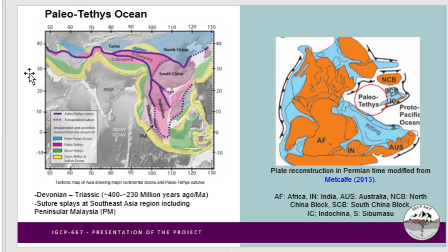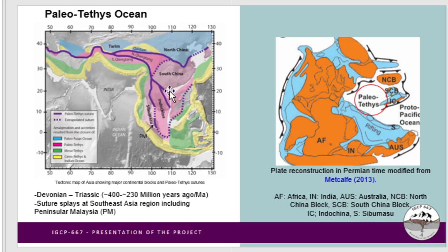The traces of the Paleotethys Ocean now as sutures extend from Europe to Asia regions. In the Asia region it splits into three branches: one going east, splitting between North China and South China; another going south, passing through Thailand, Peninsular Malaysia, and Indonesia regions.